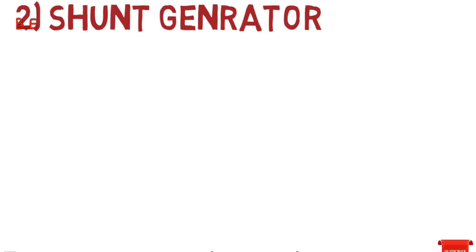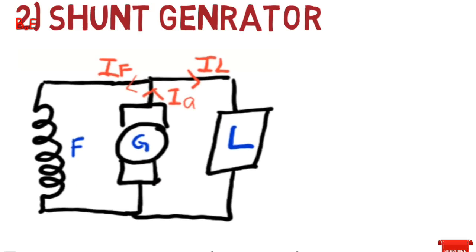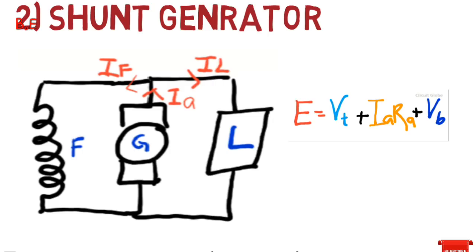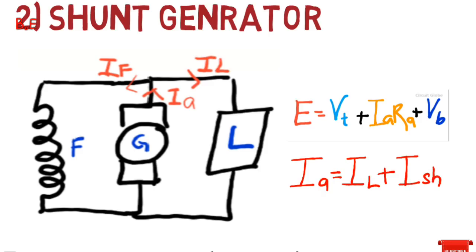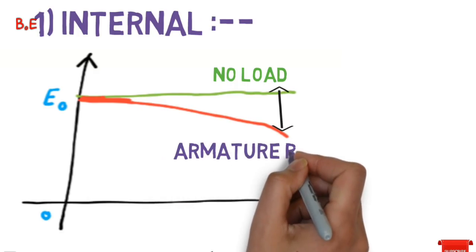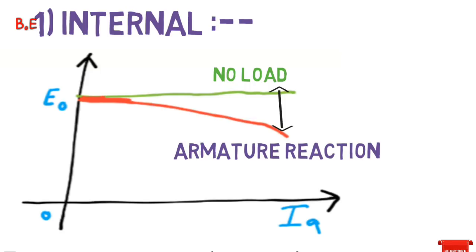Now let's see the performance of a shunt generator. The circuit diagram is shown in the figure. The induced voltage equation is E = VT + IA·RA + VB, and the current equation is: armature current equals load current plus shunt current. If we increase the load, IL increases, resulting in an increase in armature current and losses. The internal characteristic is plotted between induced voltage and armature current, and the difference between no load and on-load induced voltage is due to armature reaction drop — hence induced voltage slightly decreases with increasing armature current.